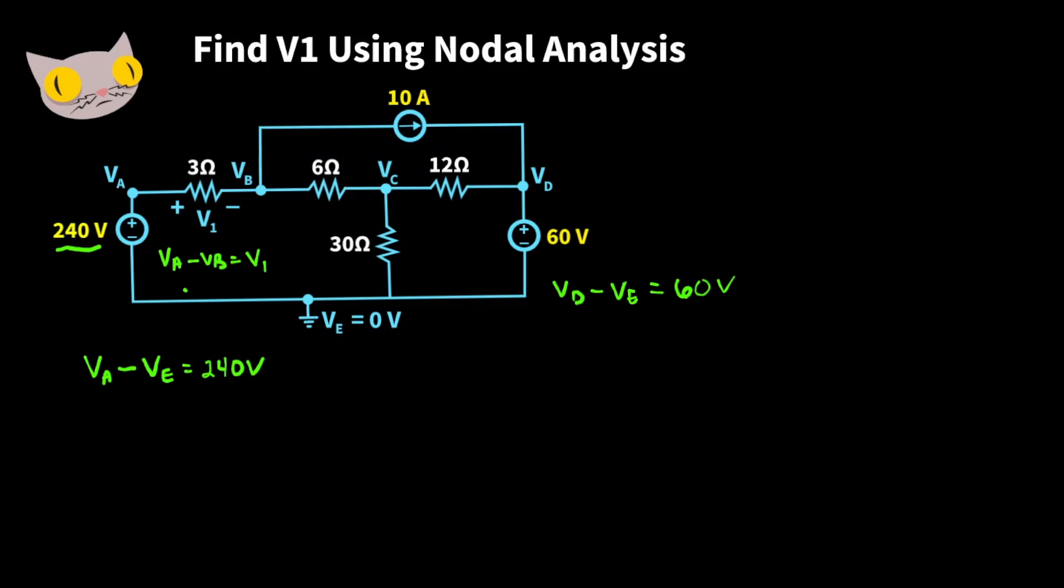So let's try to find V1. The first step is to sum the currents on each node. Remember currents according to Ohm's law is equal to voltage over resistance. Also keep in mind that currents entering a node are negative and currents leaving a node are positive.